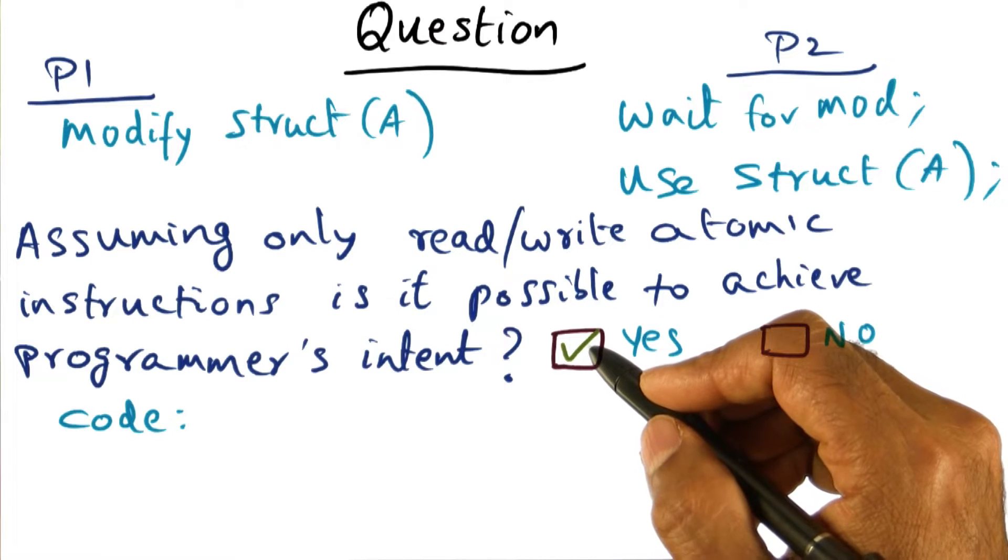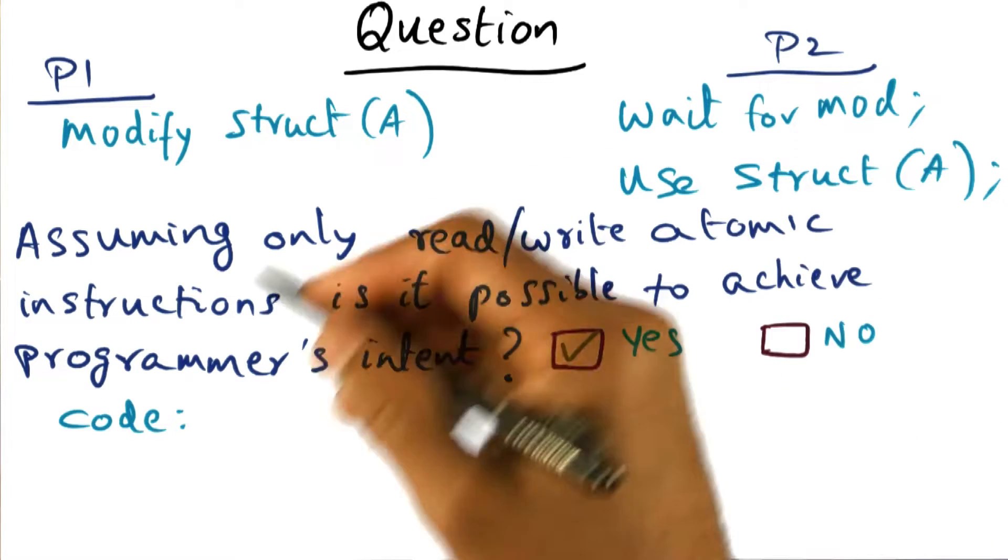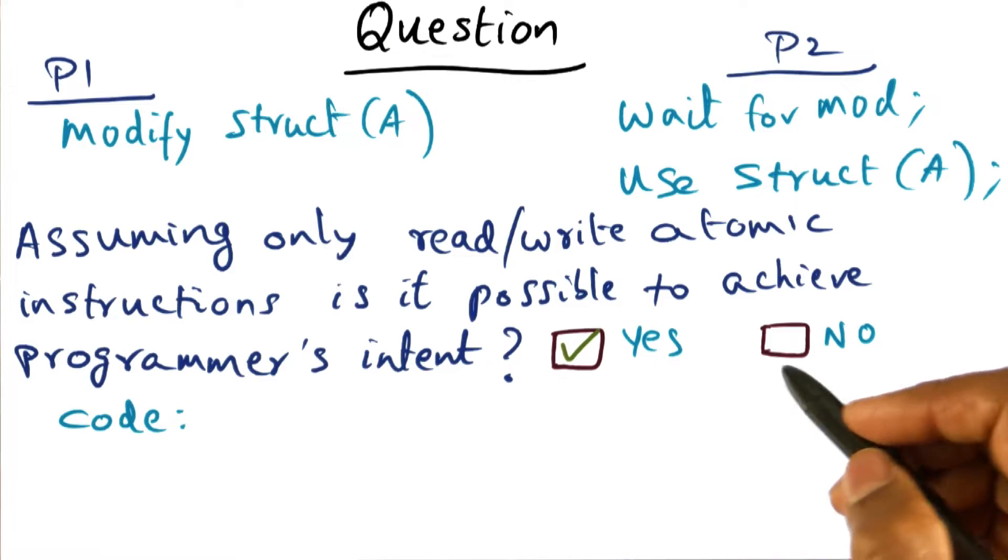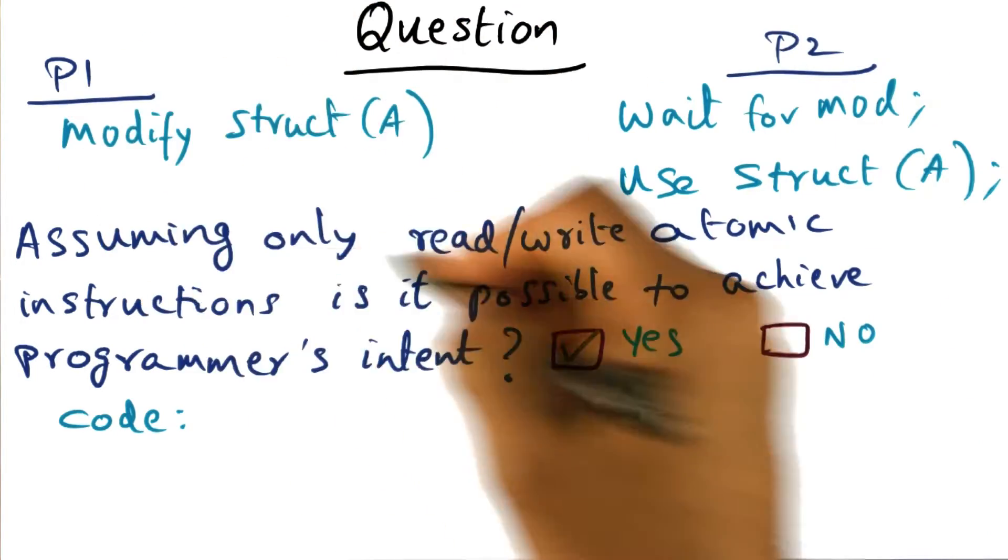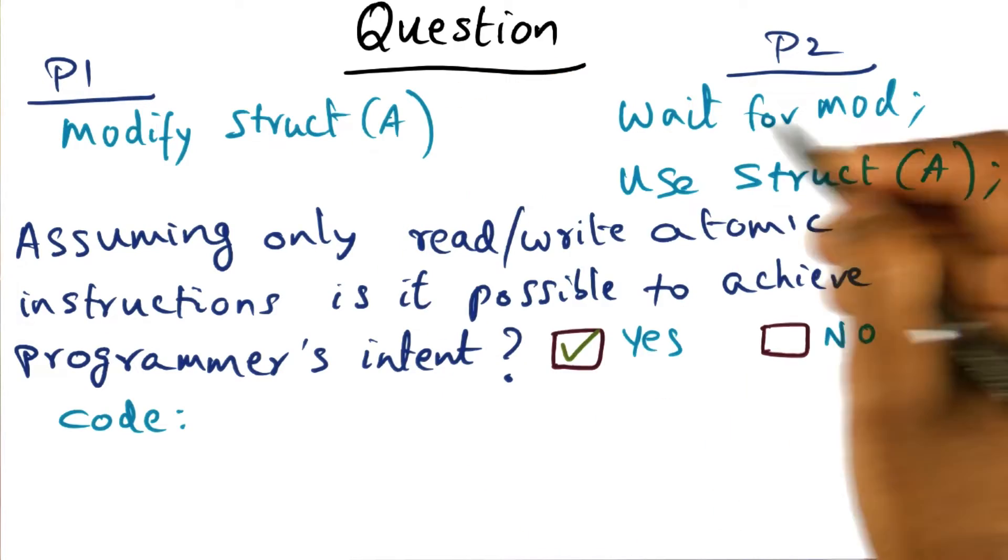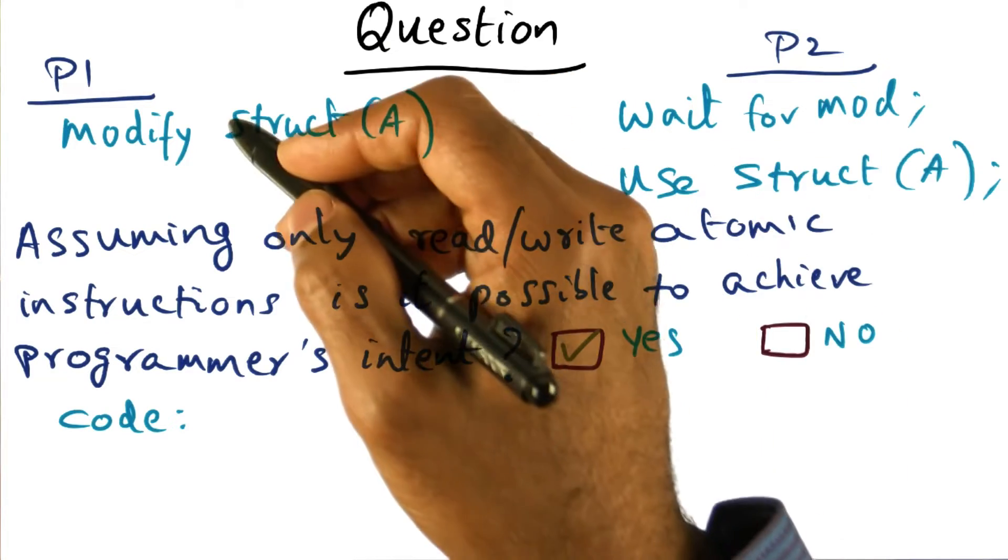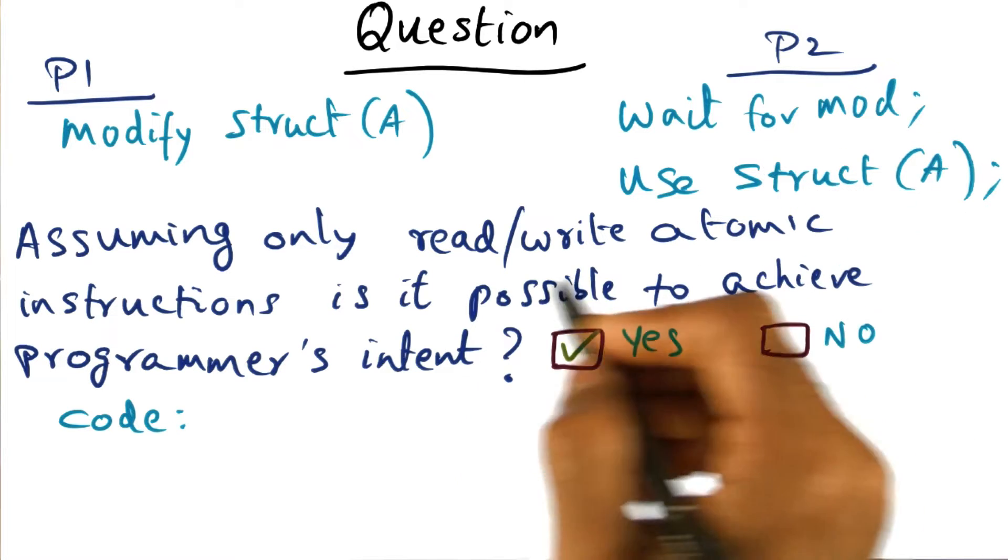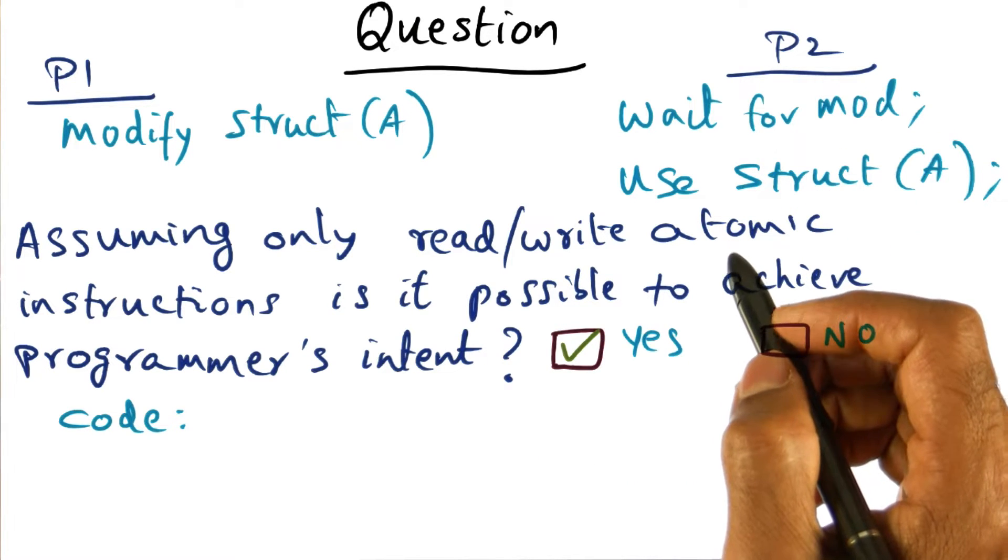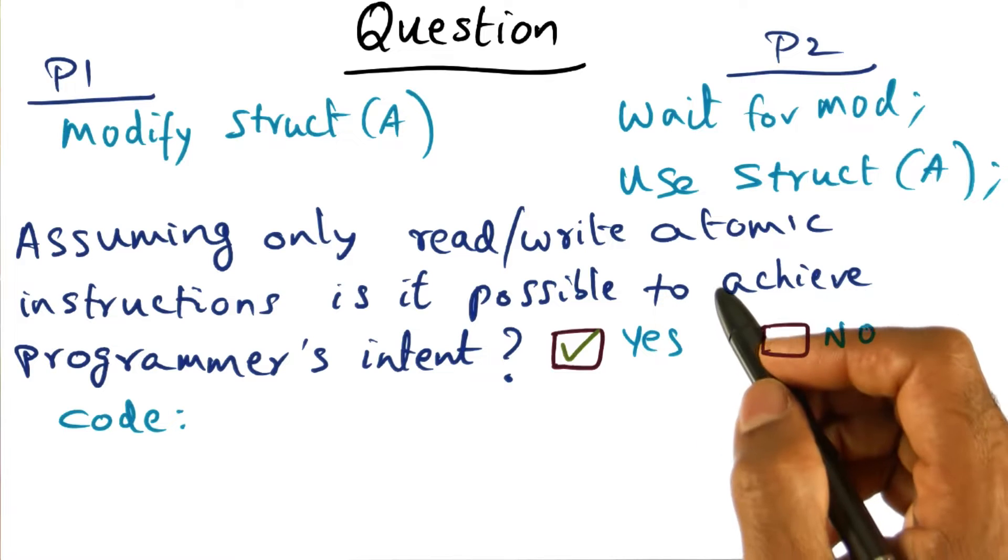If you answered yes, then you and I are on the same wavelength. And in the next few panels, I'm going to show you how this particular programming construct that a multi-threaded program may execute in terms of producer and a consumer can actually be accomplished with simple read-write atomic operations available in the instruction set of a processor.